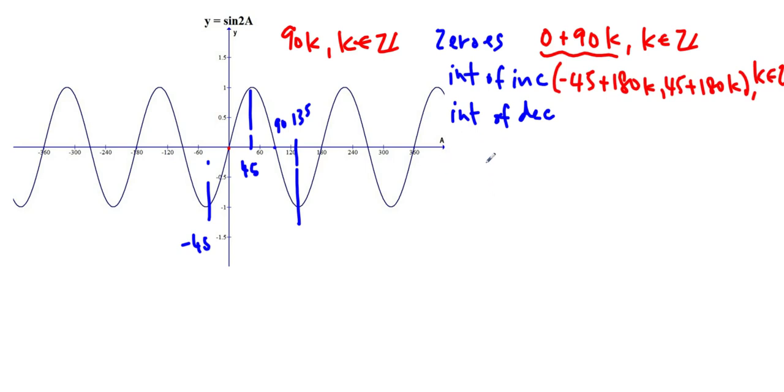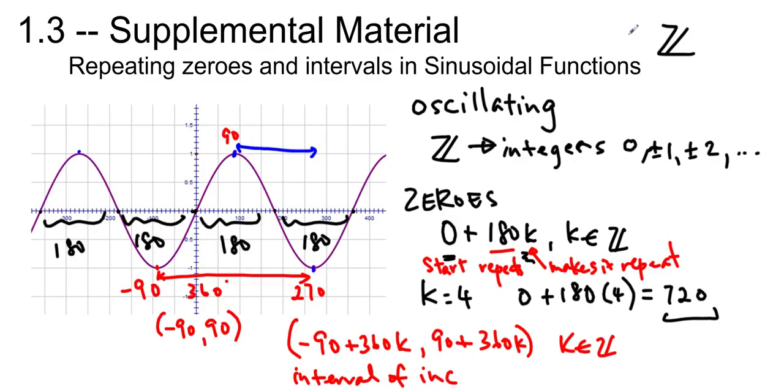And the interval of decrease, we start at the 45 and we're going to the 135, so it's 45 plus 180k to 135 plus 180k, k in Z. Okay, so hopefully that was helpful to you, and it helps you to figure out what the zeros and intervals are for an oscillating function. Thanks for watching, and have a good day.